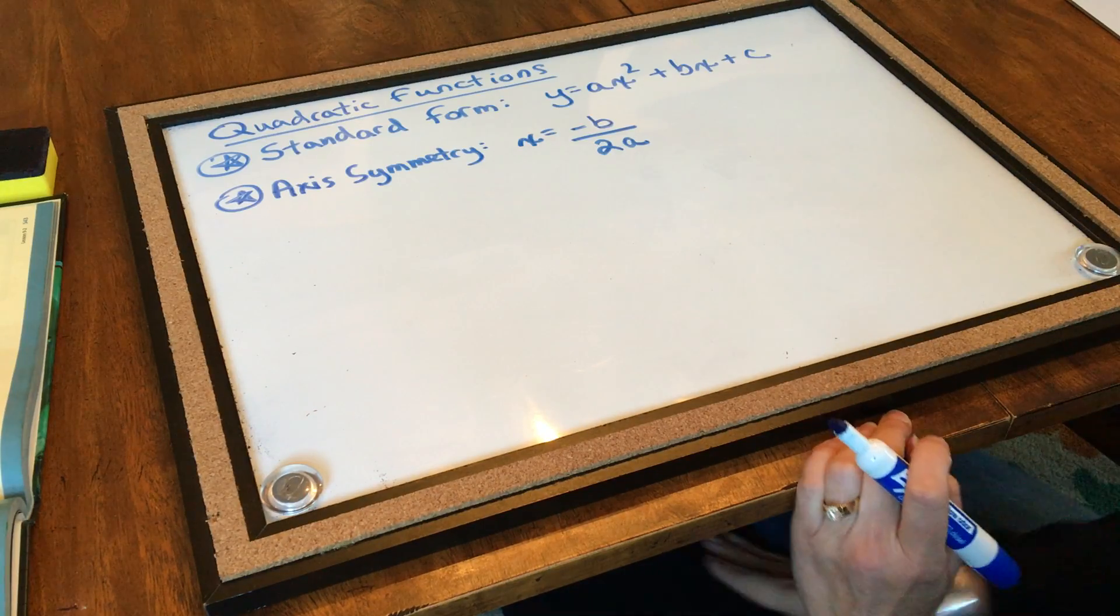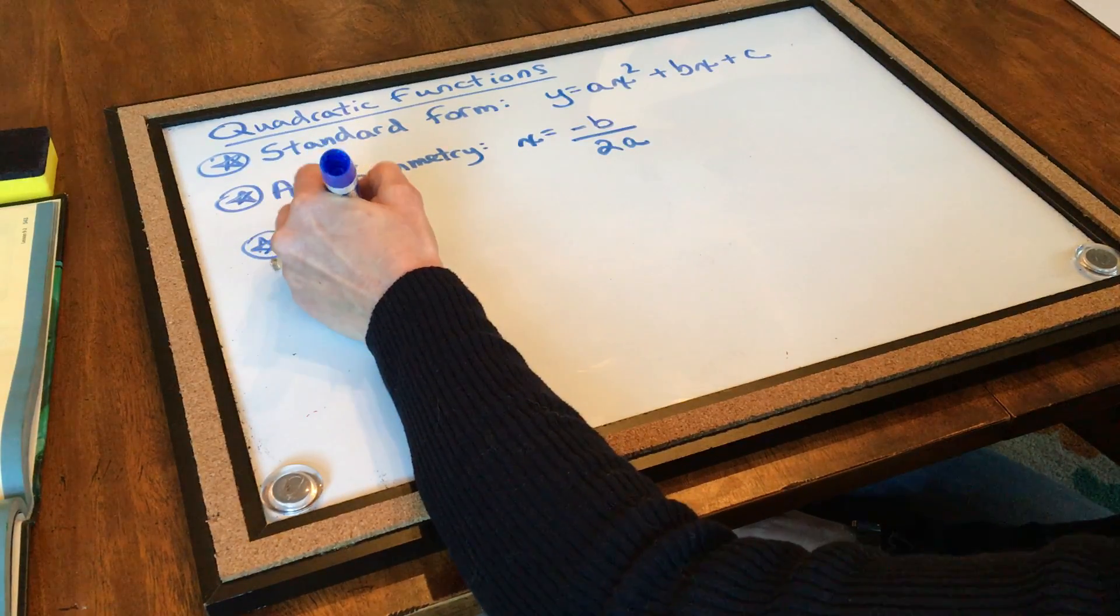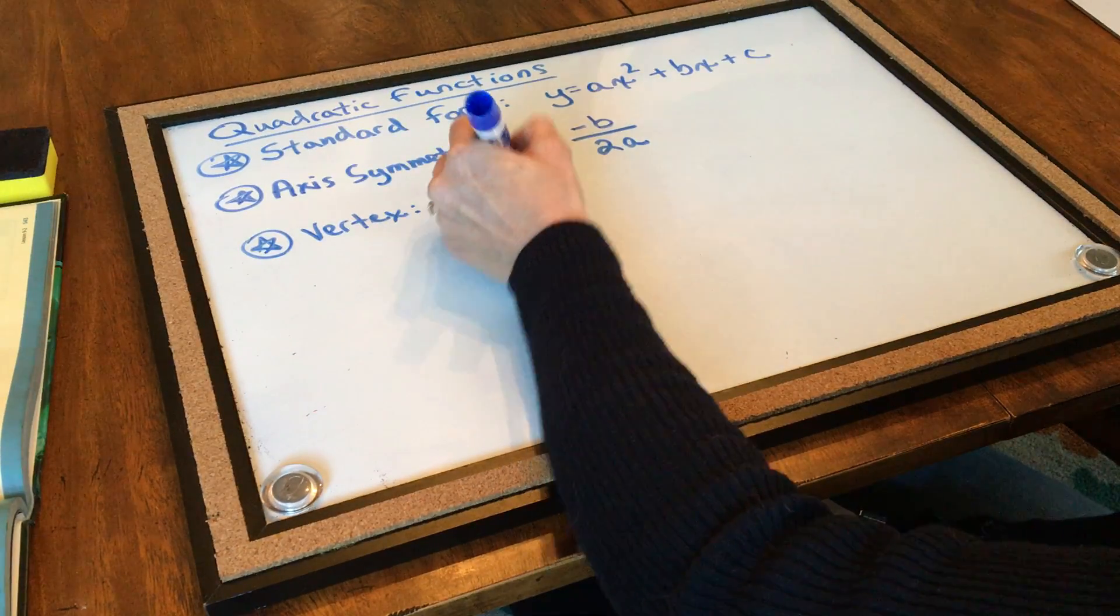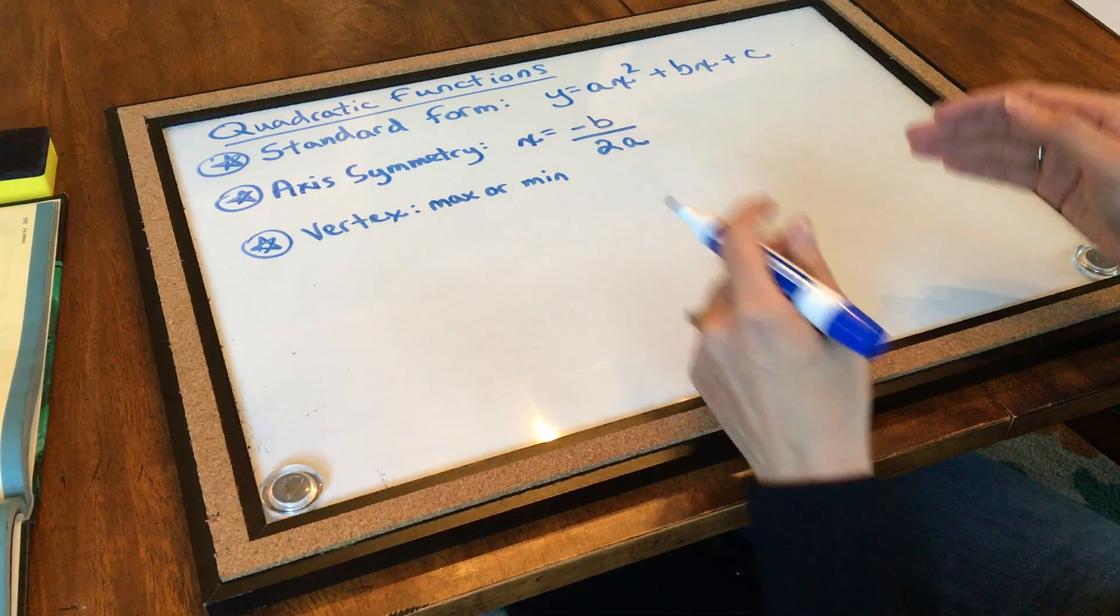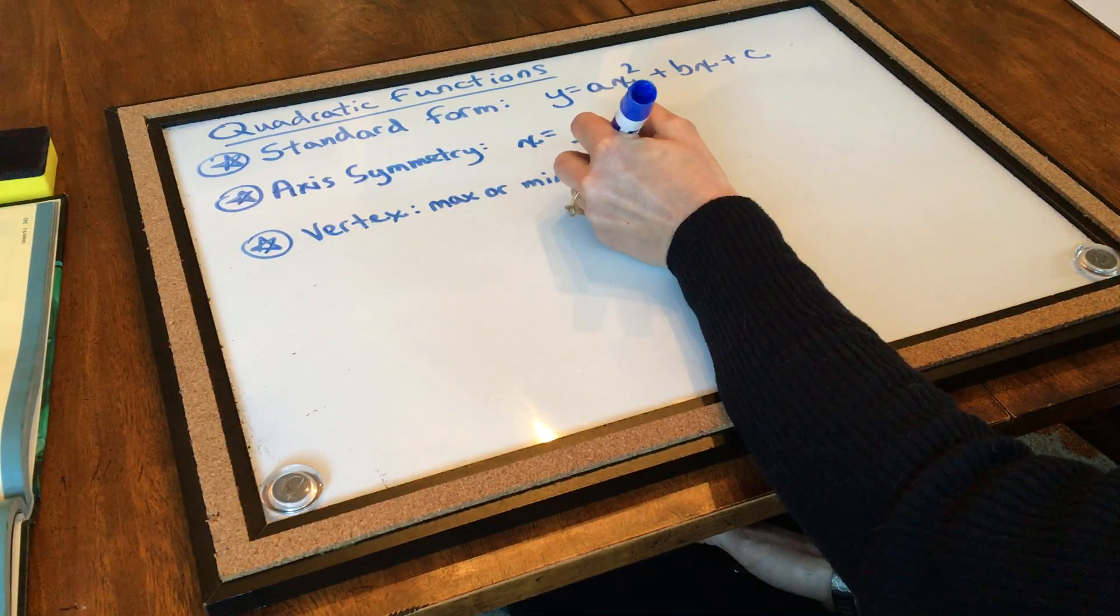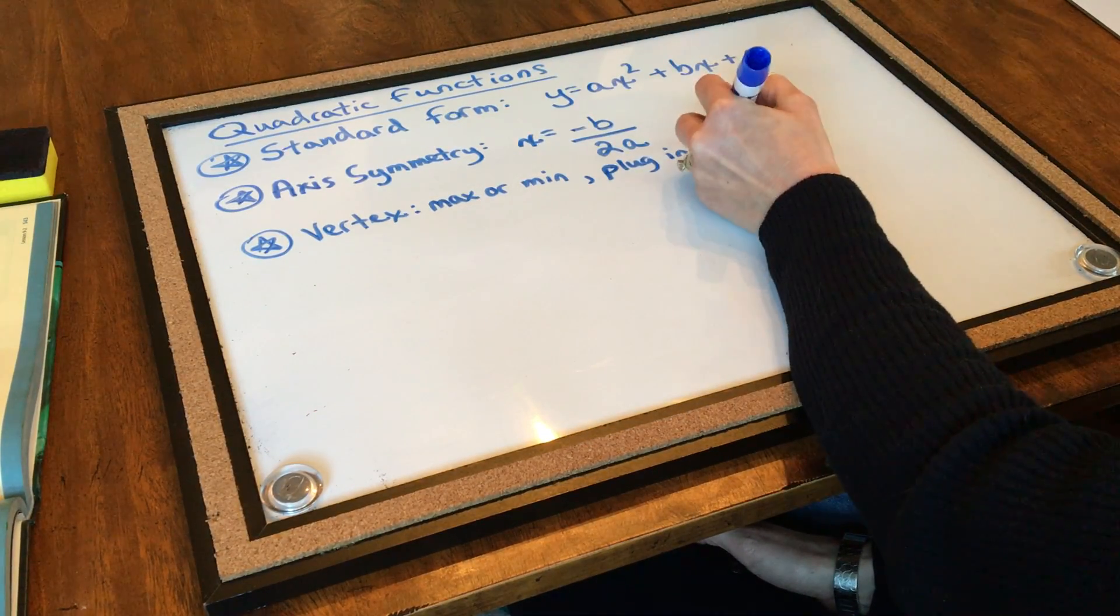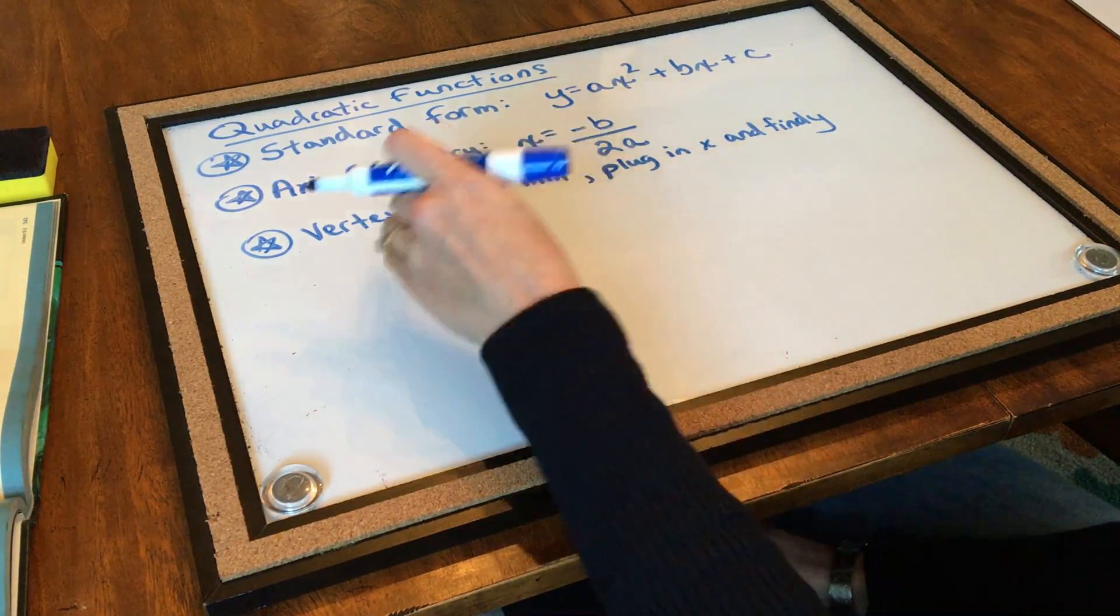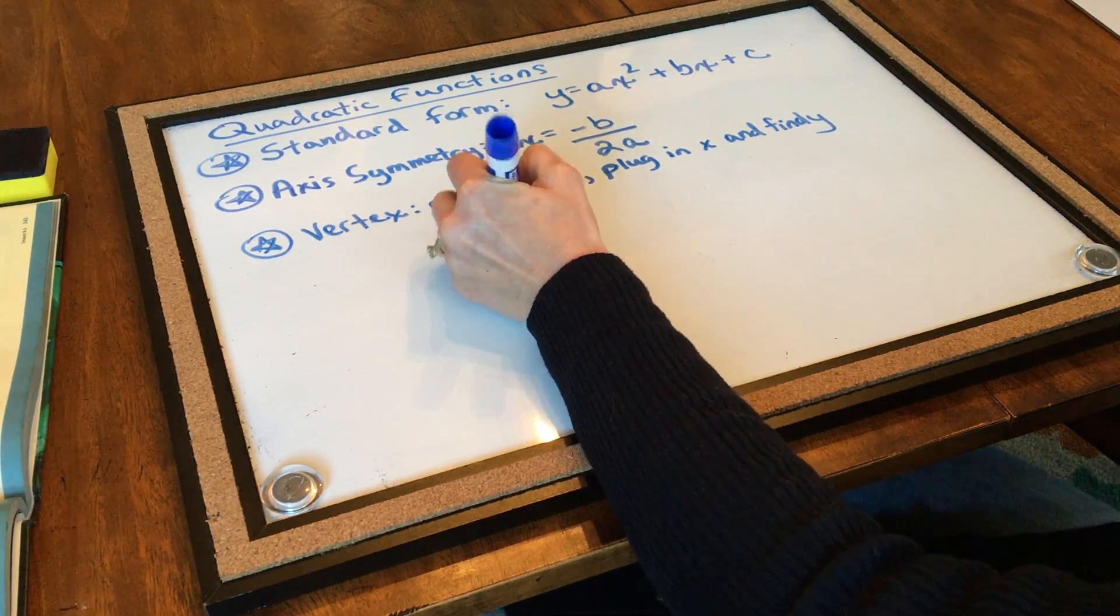We can also find the vertex of any parabola and remember, the vertex is the maximum or the minimum of a parabola, depending on whether you've got a happy parabola pointed up or a sad one pointed down. And in order to do that, what we're going to do is we're going to plug in our value for x and find y. And then, our vertex is always going to be a coordinate point. So, it's always going to be an xy coordinate point.